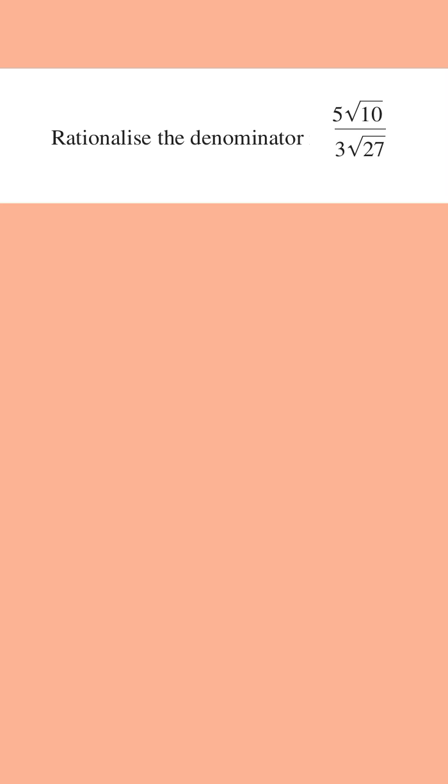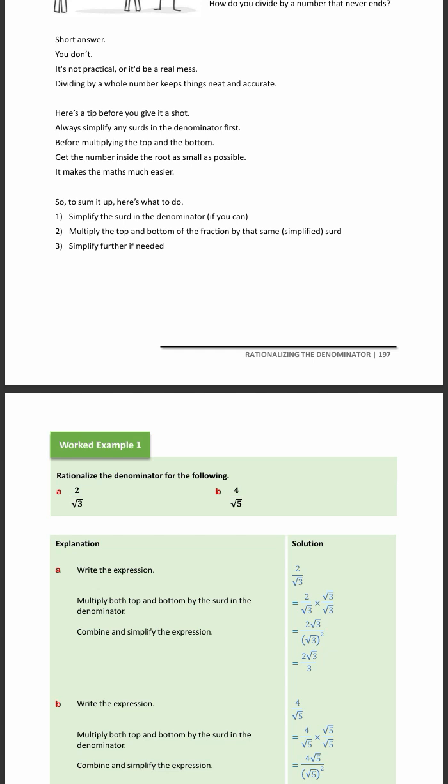It's really only three steps when you have to rationalize the denominator when you have it in this form. The first step is to simplify the root in the denominator if you can. You always want to have it in its simplest form.